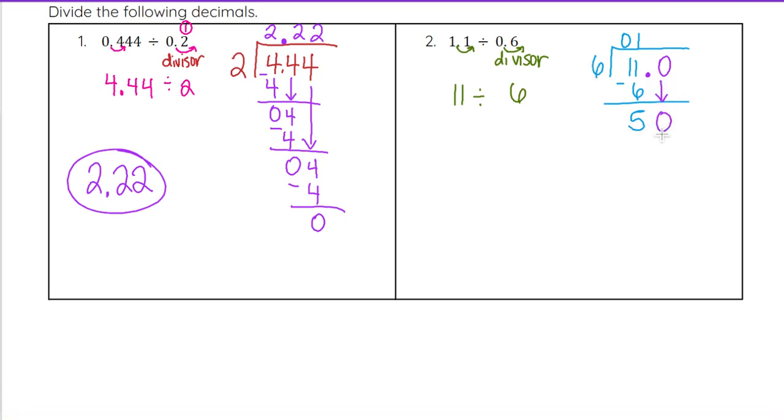6 does go into 50, and it will go into 50 8 times. So we will put an 8 here. So 8 times 6 is 48, and we subtract. 50 minus 48 is 2.